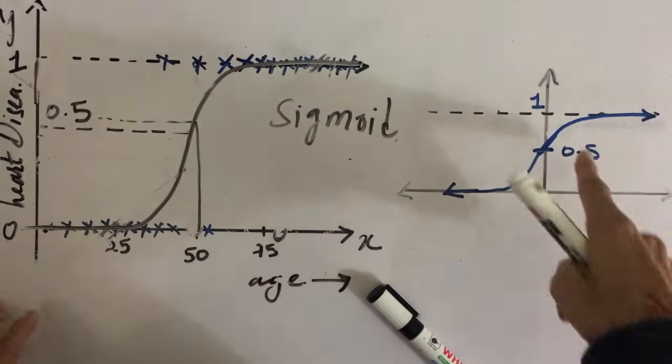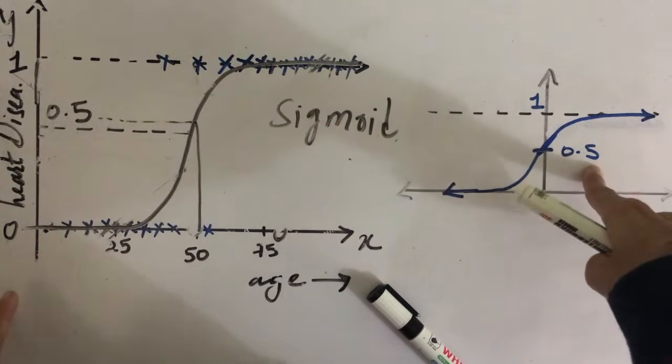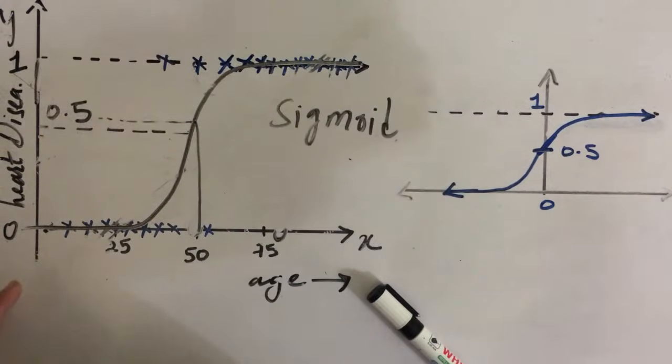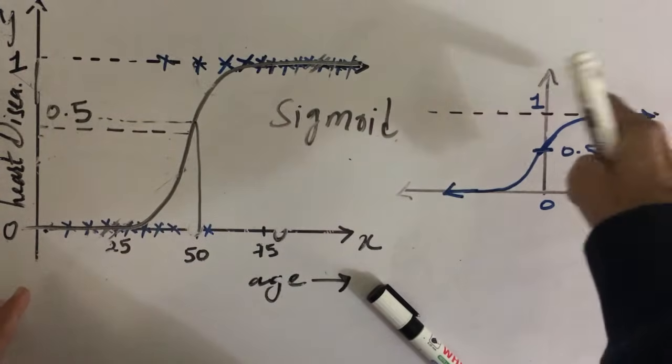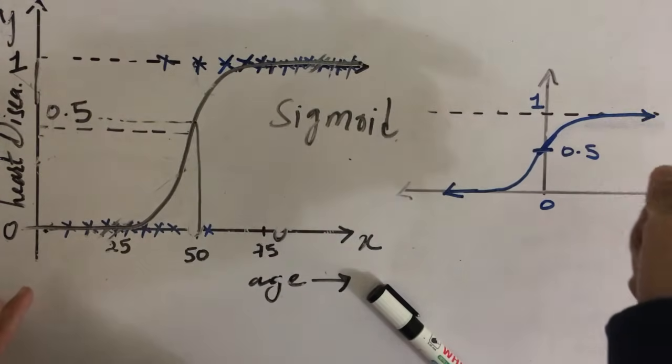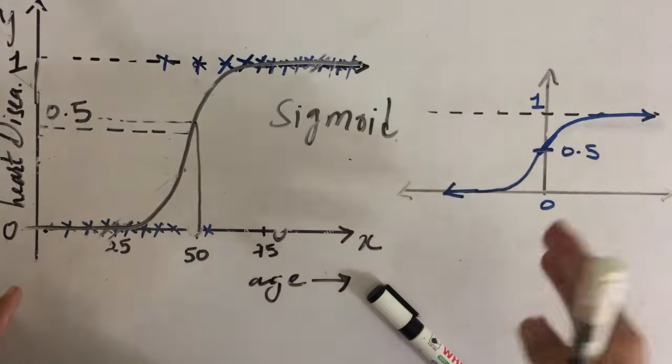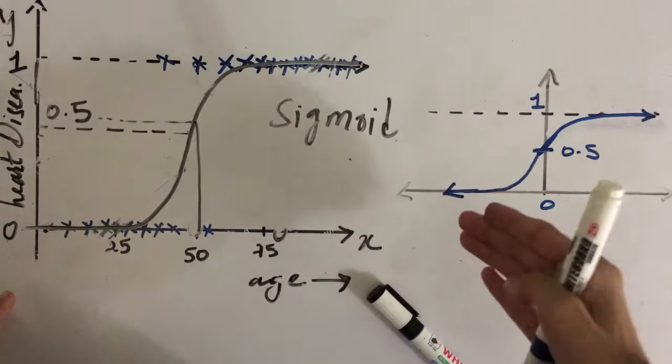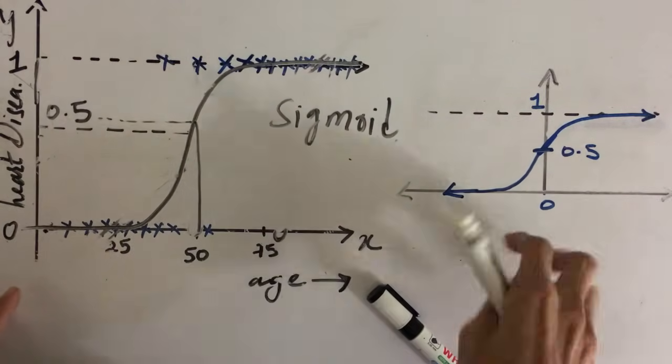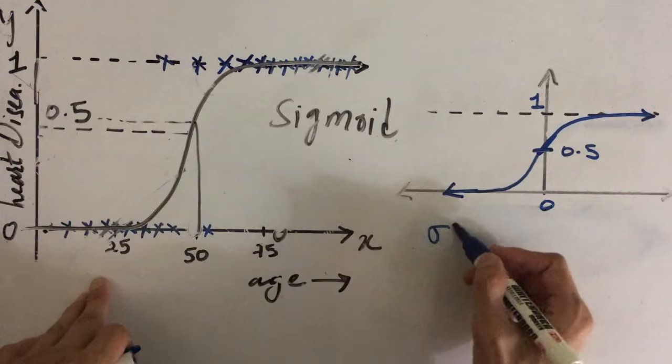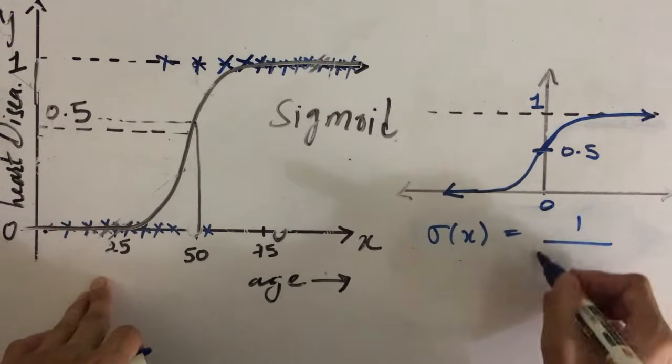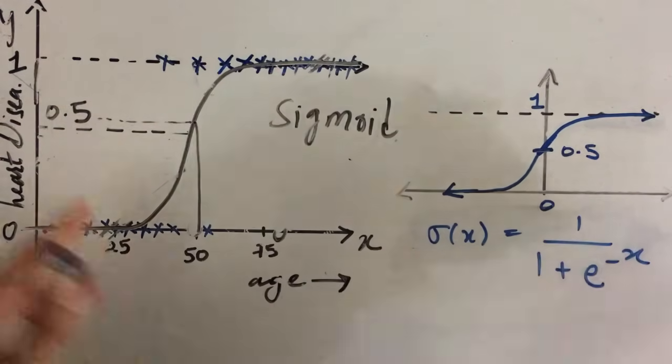So sigmoid curve takes 0.5 as the value when our x is 0, and when our x is very large it takes roughly 1 as the value, not exactly 1 but like 0.9999 or so. And when the x is very low, it takes almost close to 0 as the value. And the formula for this curve is 1 upon 1 plus e power minus x.